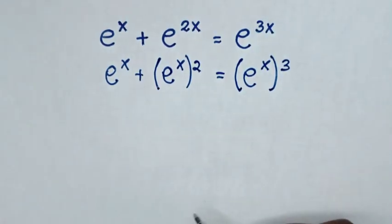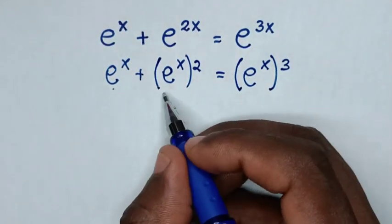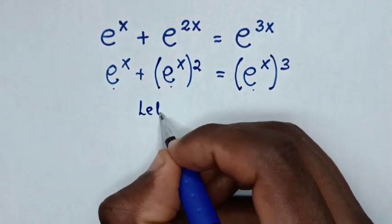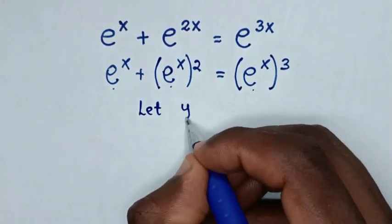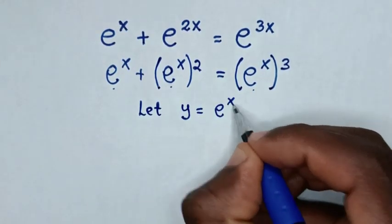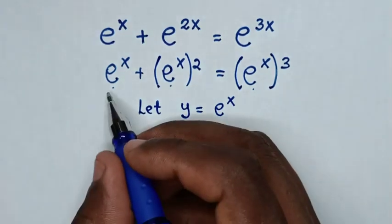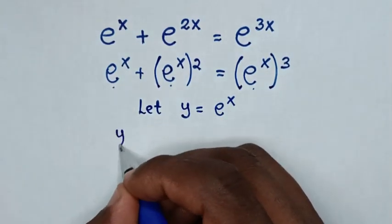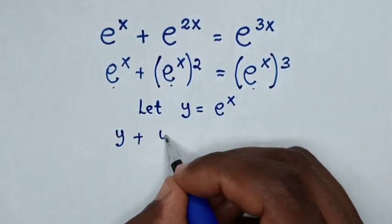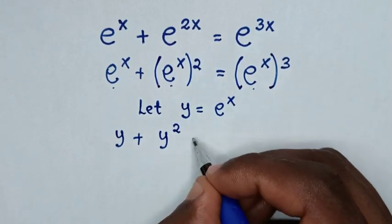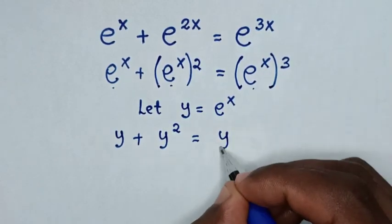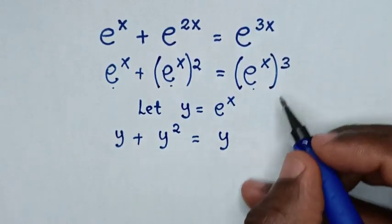In the next step, e power of x is common, so we let y equal to e power of x. Then our equation becomes y plus y squared is equal to y cubed.